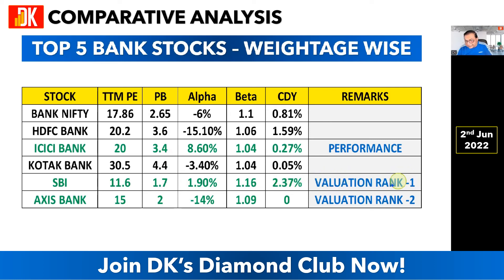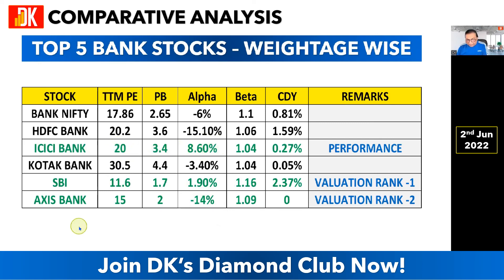In terms of valuation, SBI ranks number one. Axis Bank ranks number two — its P/E is 15, lower than Bank Nifty, and P/B is 2, also lower than the index. However, Axis Bank has underperformed the benchmark Nifty 50 by 14%. In terms of performance, ICICI Bank scores the best with a reasonable P/E ratio. So in private banks, we conclude Axis Bank is best on valuation and ICICI Bank is best on performance. SBI overall ranks number one. My best picks are SBI, ICICI Bank, and Axis Bank.